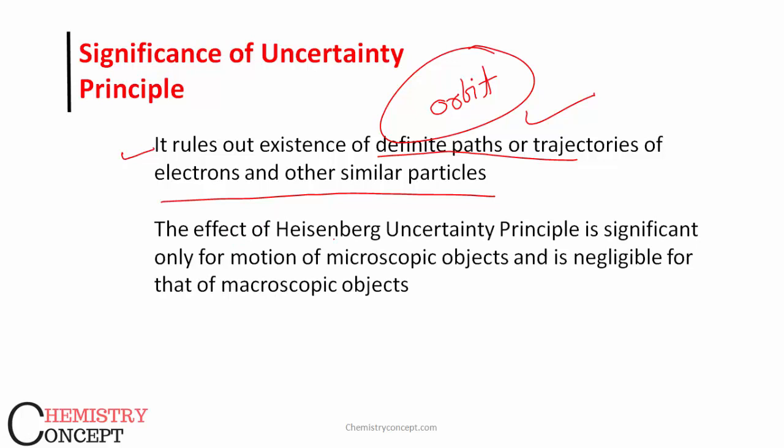Again, the effect of Heisenberg's uncertainty principle is significant only for motion of microscopic objects. It is not significant for large objects, it is only significant for very small particles like electron which behave like a wave.